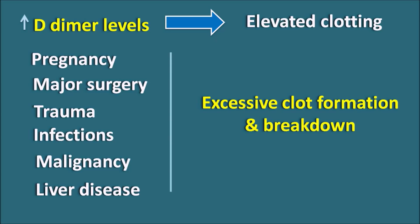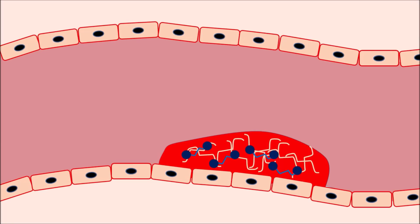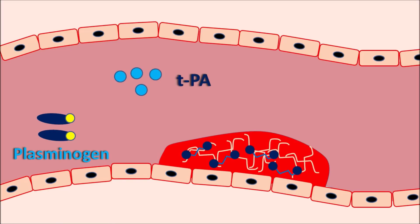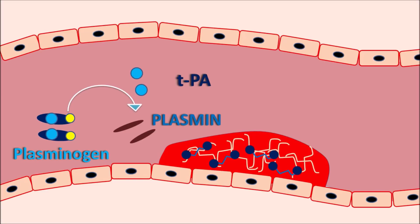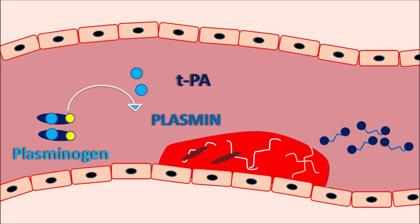In all these conditions, D-dimer cannot be cleared at the same rate as it is formed, so its levels increase within the body, signaling a pathological condition. The clot contains the fibrin meshwork along with D-dimer protein. Clot formation is controlled by clot-dissolving substances, most importantly TPA (tissue plasminogen activator). TPA acts on the precursor plasminogen, converting it into plasmin — a clot-dissolving substance. Plasmin breaks the fibrin meshwork, releasing it as fibrin degradation products and D-dimer. As the clot dissolves, D-dimer levels become excessively increased.